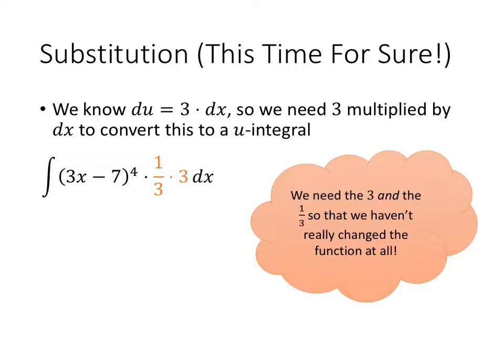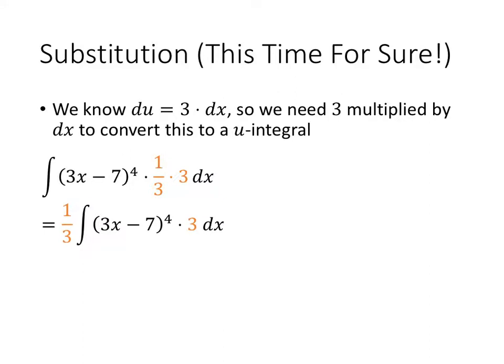If we just put in the 3, then we've multiplied our function by 3, and we're not going to get the correct antiderivative. But we only really want the 3 to be there. We don't really want that one-third to be there. We had to put it there so that we didn't change our function. But what we want to do is factor that out. And since one-third is a constant, we can factor it all the way out of our integral.